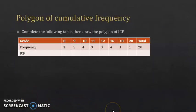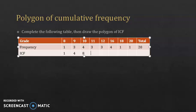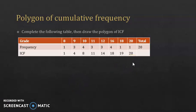For the same question: complete the following table, then draw the polygon of increasing cumulative frequency. For this row, we need to fill it with the increasing cumulative frequency. For the first value, we drop the same frequency. For the second value, it's the cumulative frequency of 8 plus the frequency of 9, which gives 4. Then we have 4 plus 4 which is 8, and so on. Keep in mind that the last value of the increasing cumulative frequency should equal the total frequency. You need the points (8,1), (9,4), (10,8) because you need the polygon of increasing cumulative frequency.